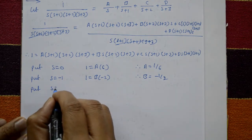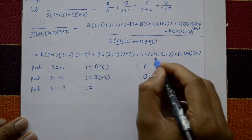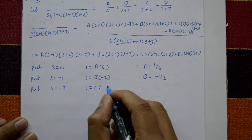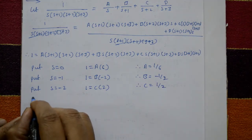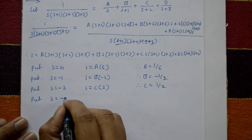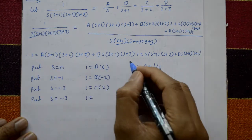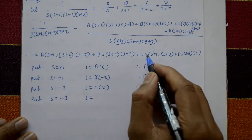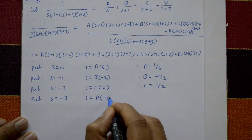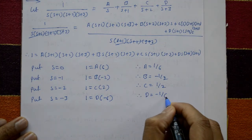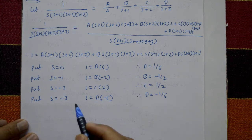Put s equal to minus 2: all other terms are zero, so 1 equals C into 2, therefore C equals 1 by 2. Put s equal to minus 3: only D remains, so 1 equals D into minus 6, therefore D equals minus 1 by 6.